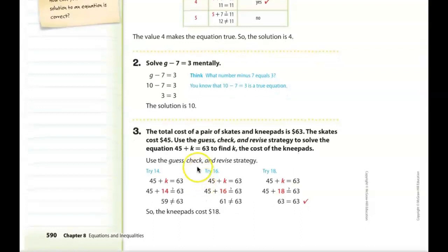Now on the third example, they're talking about guessing and checking different numbers to see which one might be correct. So if the total cost of skates and knee pads is $63, and you know that the skates cost $45, use guess, check, and revise strategy to solve the equation. 45 plus something, though we don't know, so K is equal to 63, find K. So this person tried 14 first, and 45 plus K, 45 plus 14 is $59.